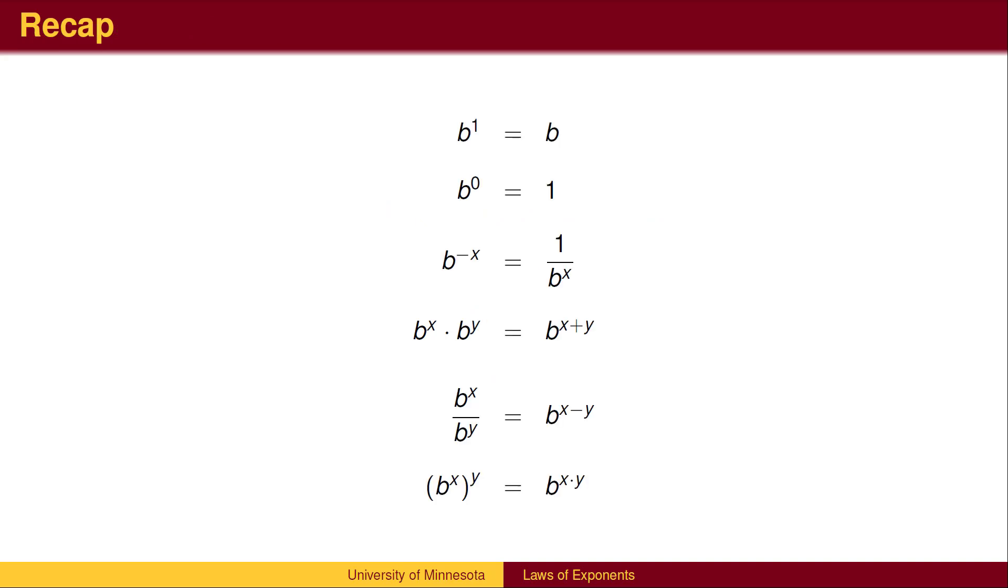To recap, here are the six laws of exponents with which you should be familiar. Anything to the first power is itself. Anything to the zero power is 1. Negative exponents are reciprocals. When multiplying terms with exponents, add the exponents. When dividing terms with exponents, subtract the exponents. When raising a power to a power, multiply the exponents.